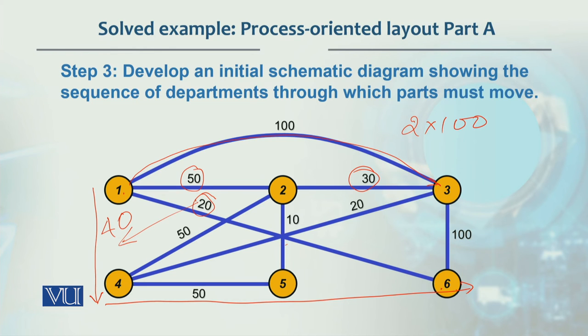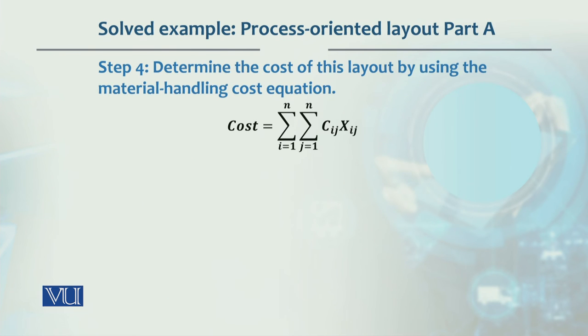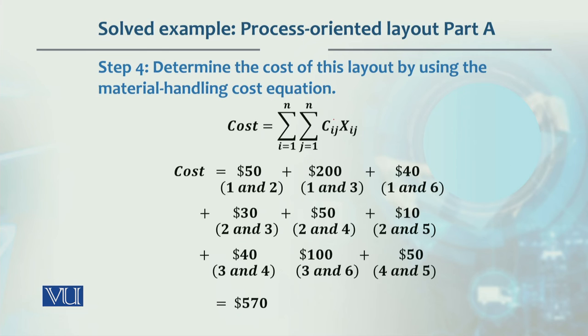On that basis, we have to evaluate the cost. Cost is basically the distance multiplied by its number of movements. Departments 1 and 3 will be 2 multiplied by 100, and 1 and 6 will be 2 multiplied by 20 because it is 2 distance and 20 times movement. We calculate the total and sum it. With the assumption that 1 dollar per load distance, the cost is $570.